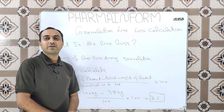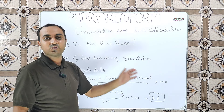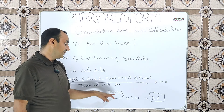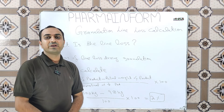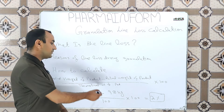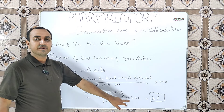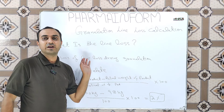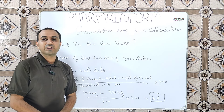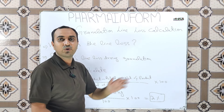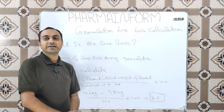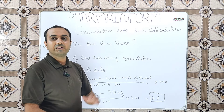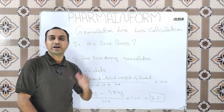Suppose we want to manufacture 100 kilograms of a product through wet granulation, and after final blending we get 98 kilograms of the final blend. The line loss calculation is: (100 − 98) ÷ 100 × 100 = 2%. This means 2% is the total line loss of the granulation process, or equivalently, 2 kilograms of product was lost during granulation.